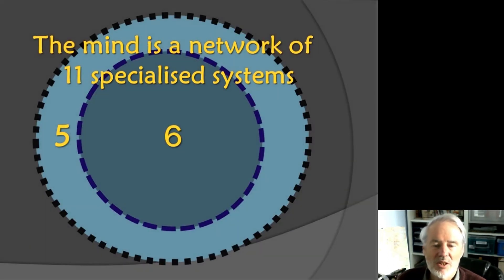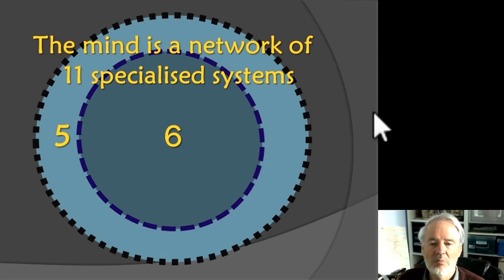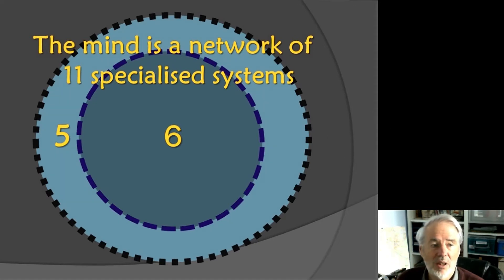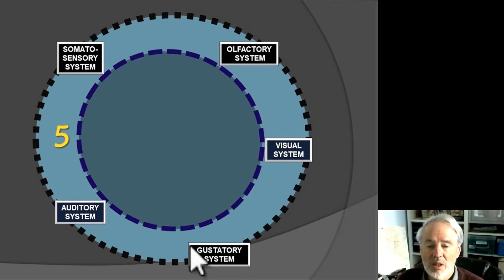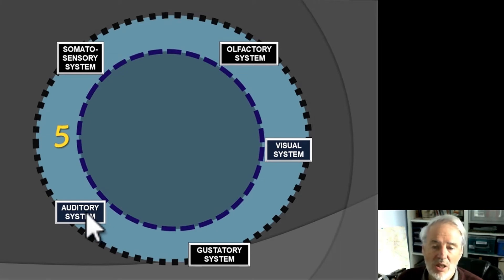In simple terms, the mind is seen as a set of eleven specialised systems, each with its own function and its own organisation. There are five in an outer layer which are in direct contact with the outside environment, and six inner, deeper ones. Let's look at the outer ones: these are immediately recognisable as cognitive systems for processing and storing representations of a particular type, reflecting the five senses.